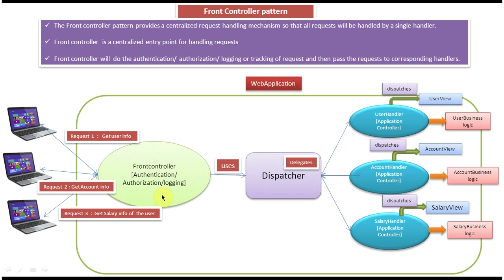Once the Front Controller finishes these common functionalities, it uses the Dispatcher to delegate the request to the handlers. Based on the request type — suppose client one sends a request to get user info — the request comes to the Front Controller. The Front Controller does all the common functionalities like authentication, authorization, and logging. Once finished and the user is validated, it passes the request to the Dispatcher to delegate to the corresponding handler.